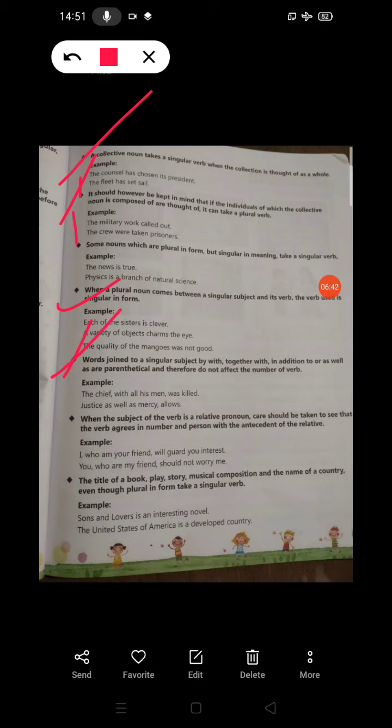The title of a book, play, story, musical composition, and the name of a country, even though plural in form, take a singular verb. For example, Sons and Lovers is an interesting novel. The United States of America is a developed country.